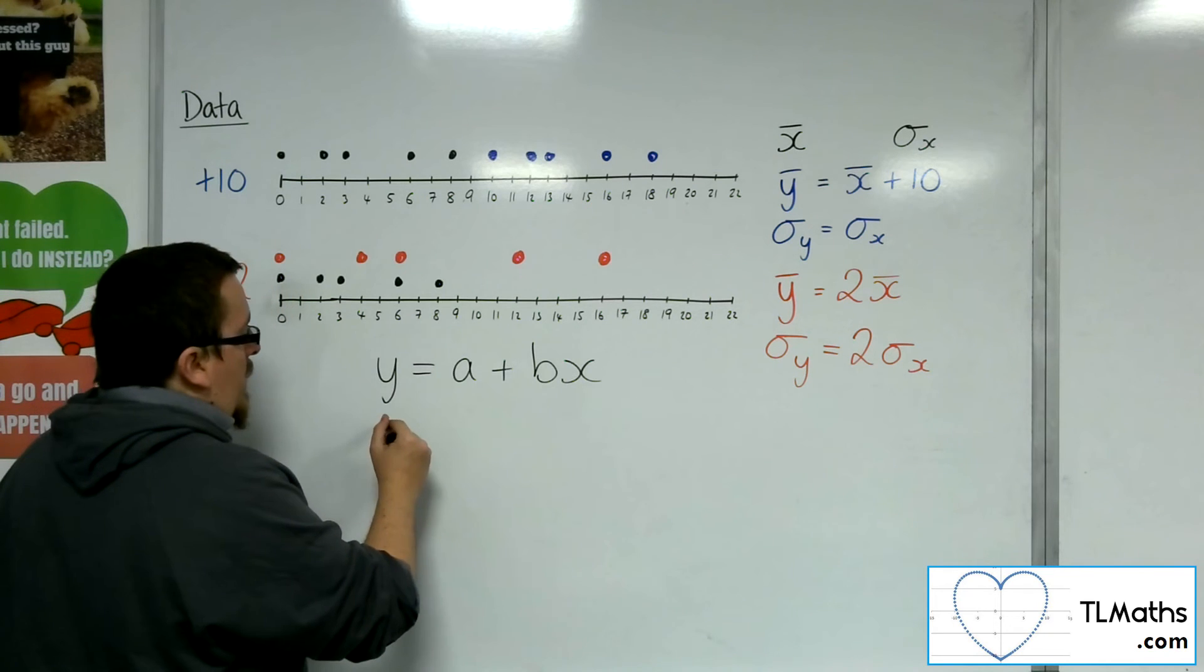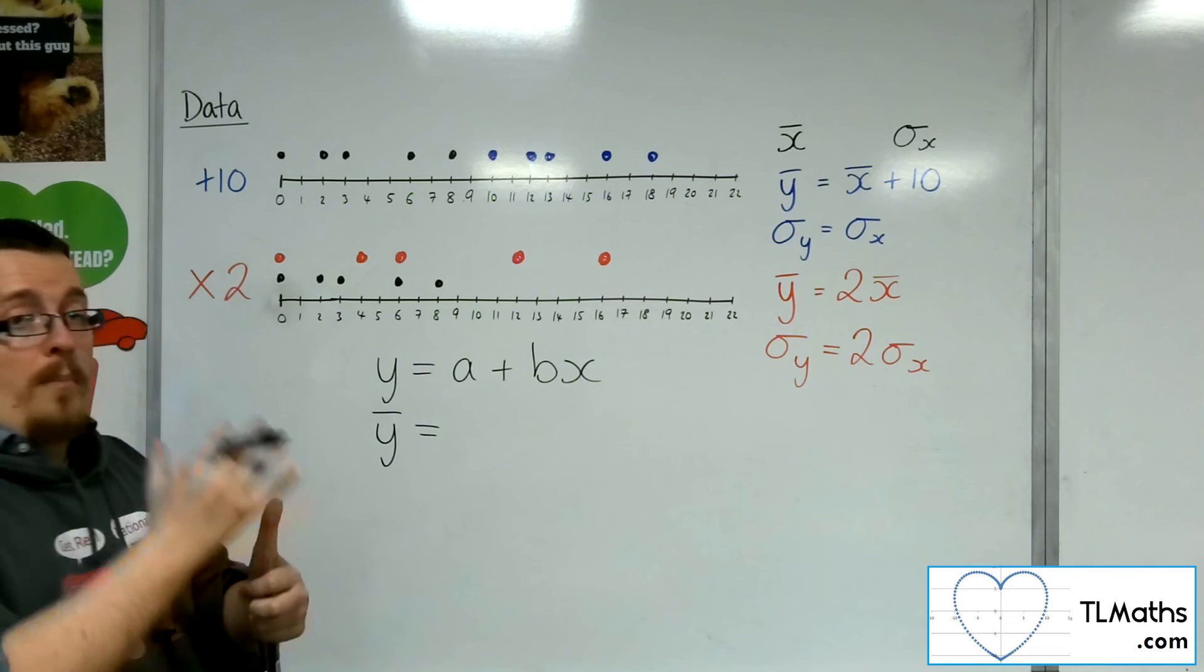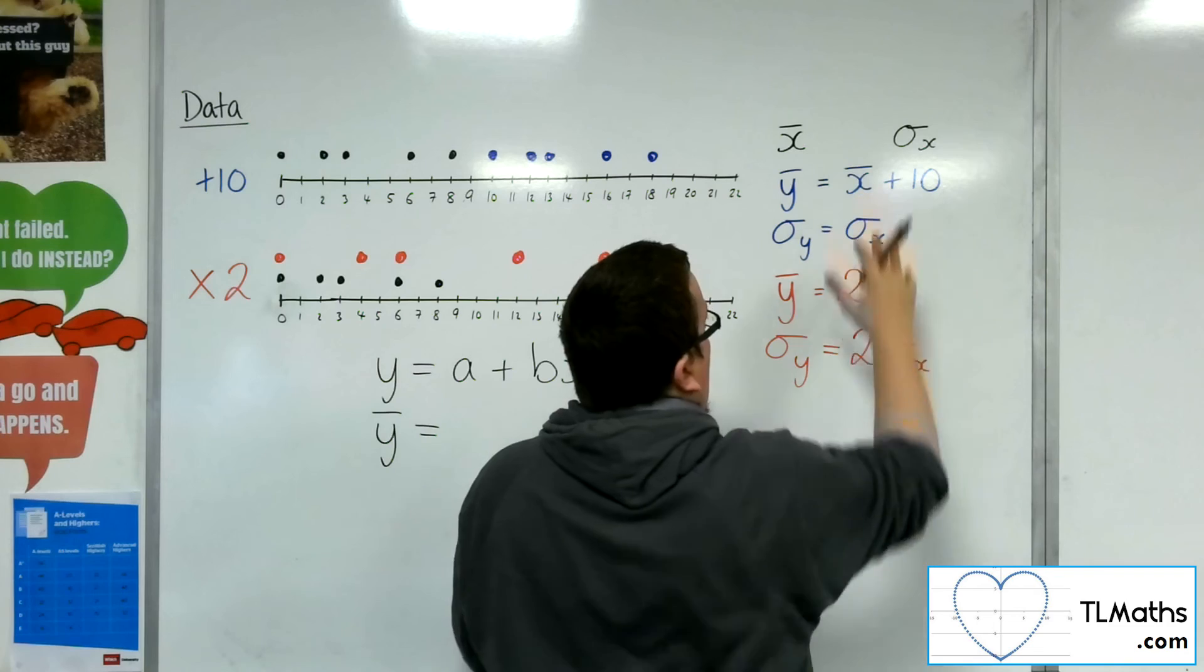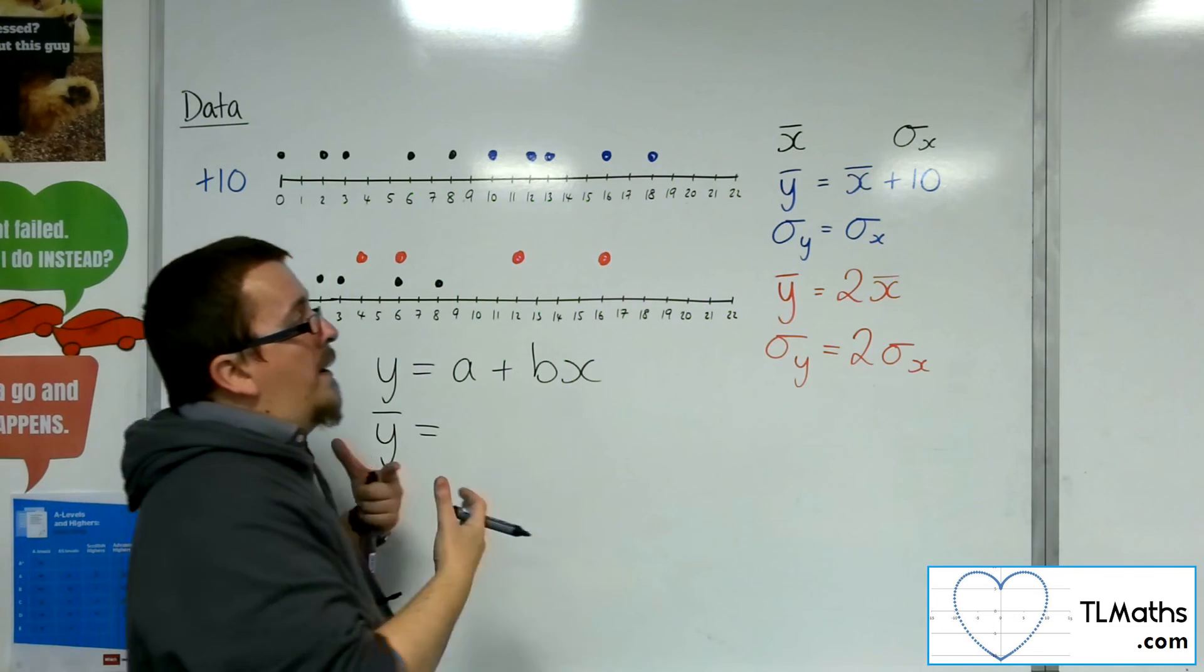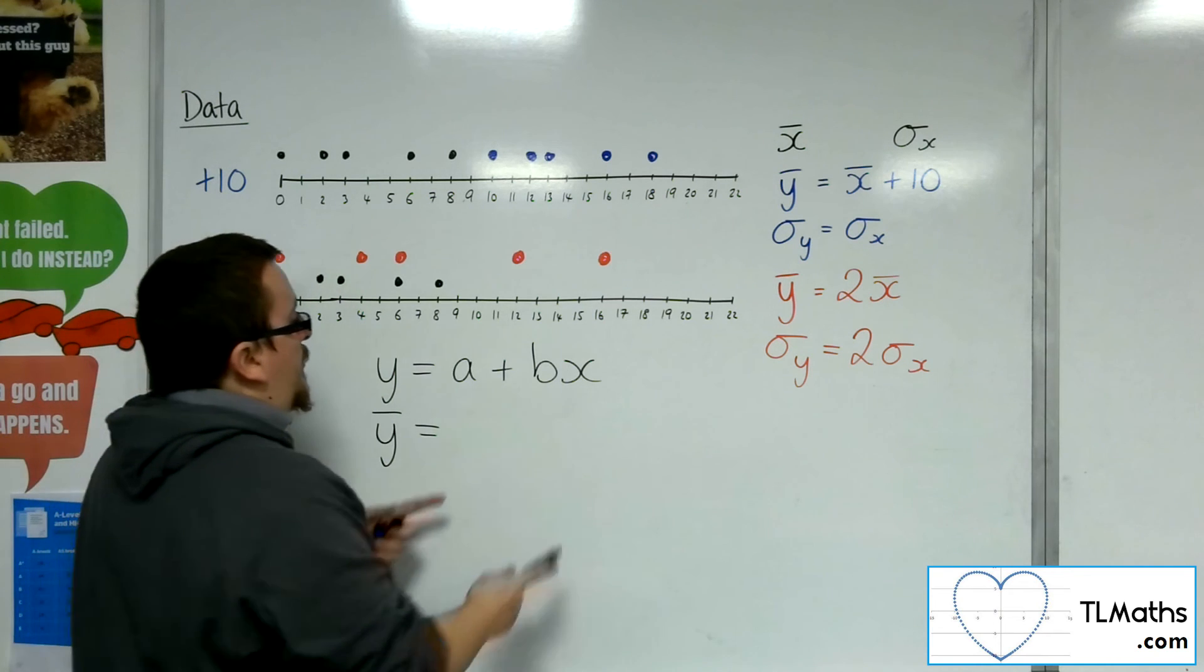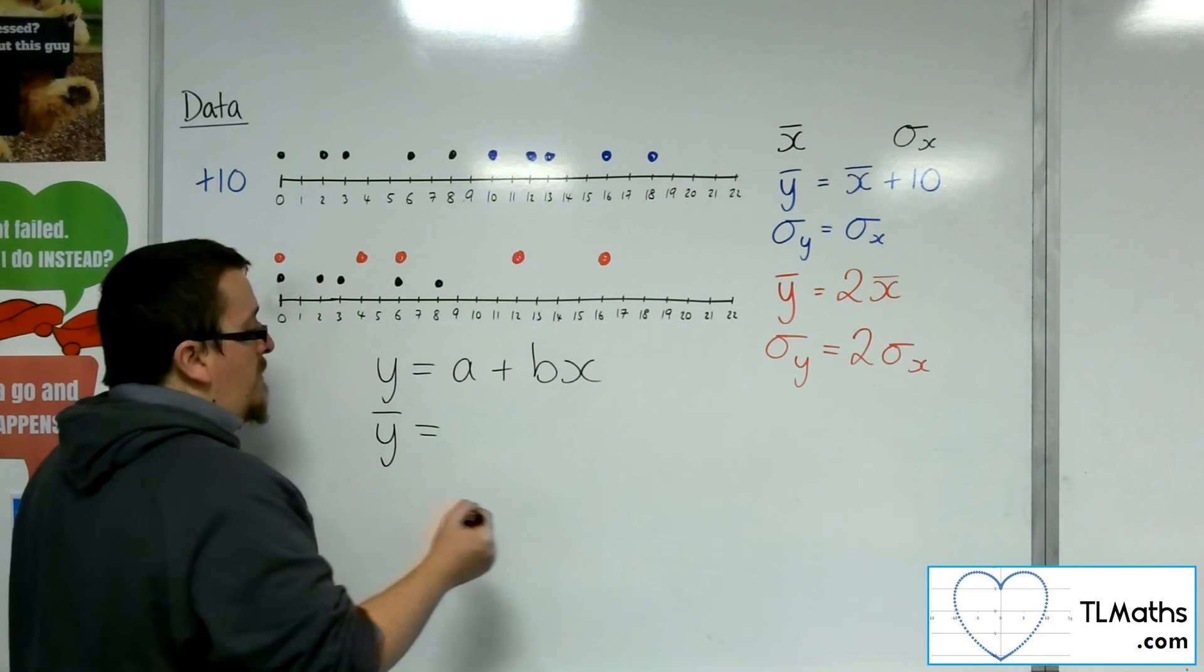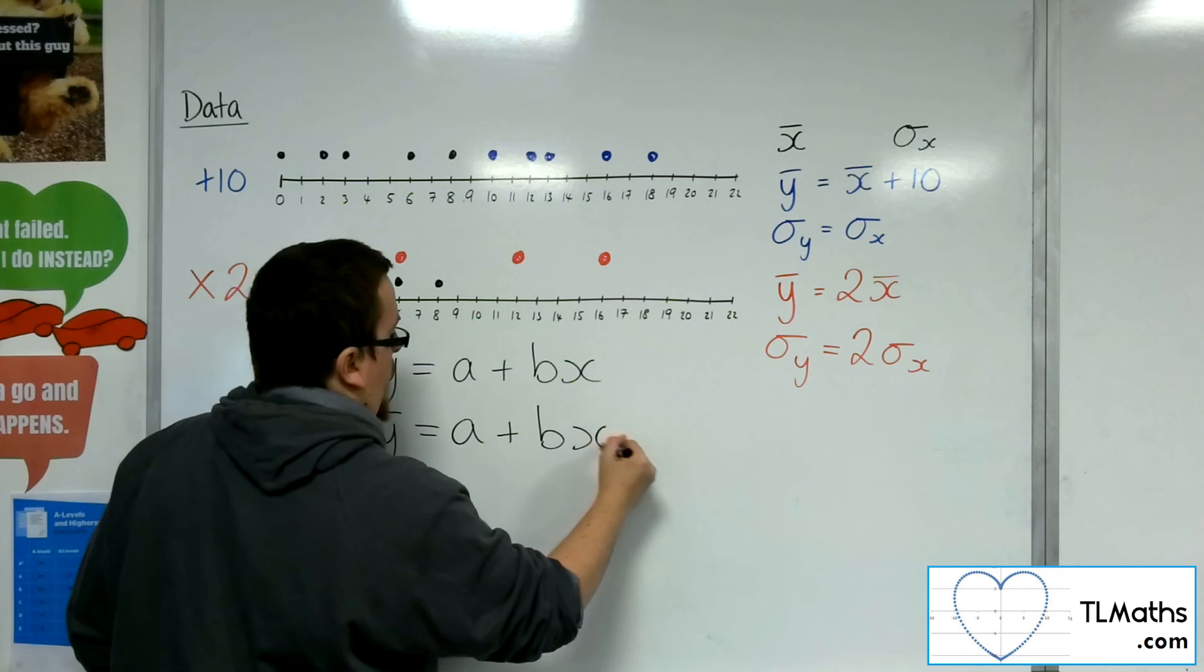Then the new mean is affected by both a translation and by a stretch, effectively. So by the addition or subtraction and by the multiplication. So it's affected by adding on a and by being multiplied by b. So the new mean will be a plus bx bar.